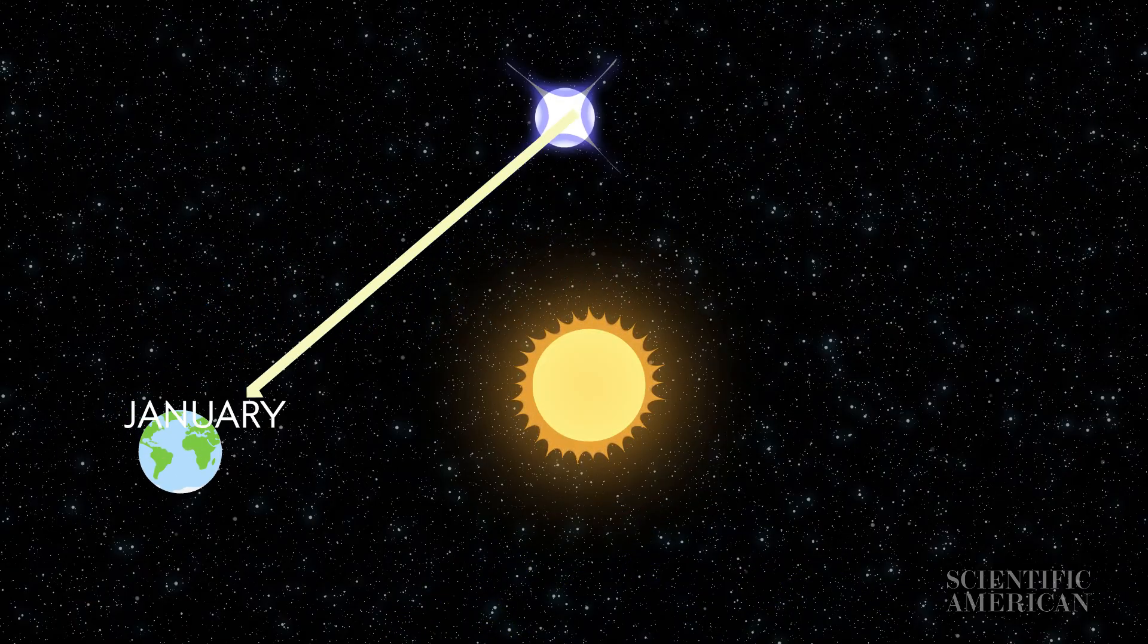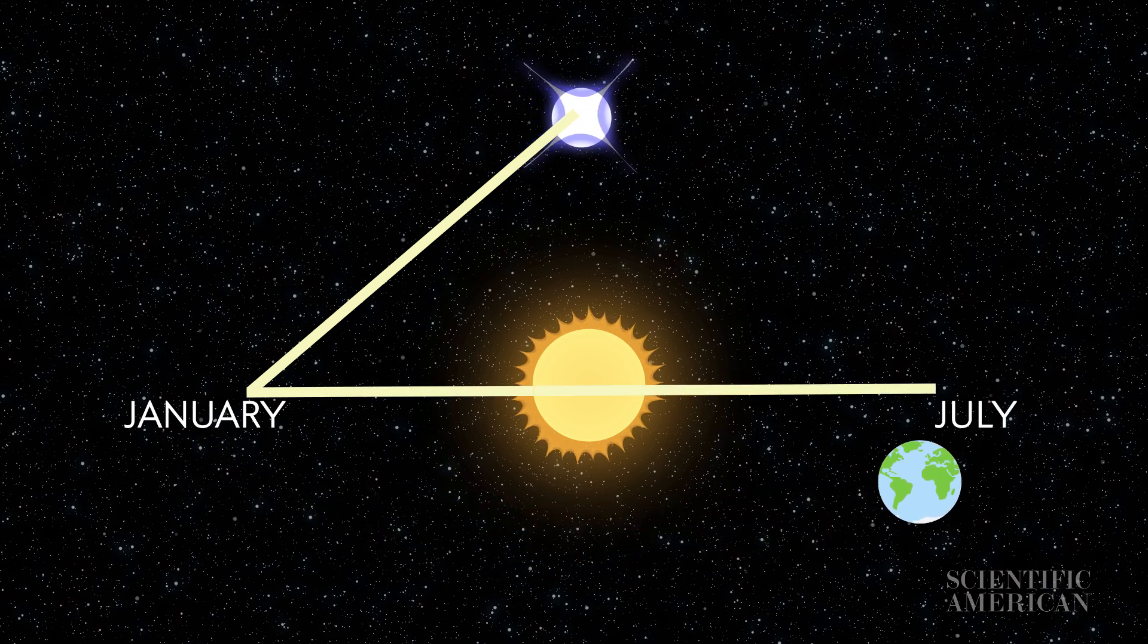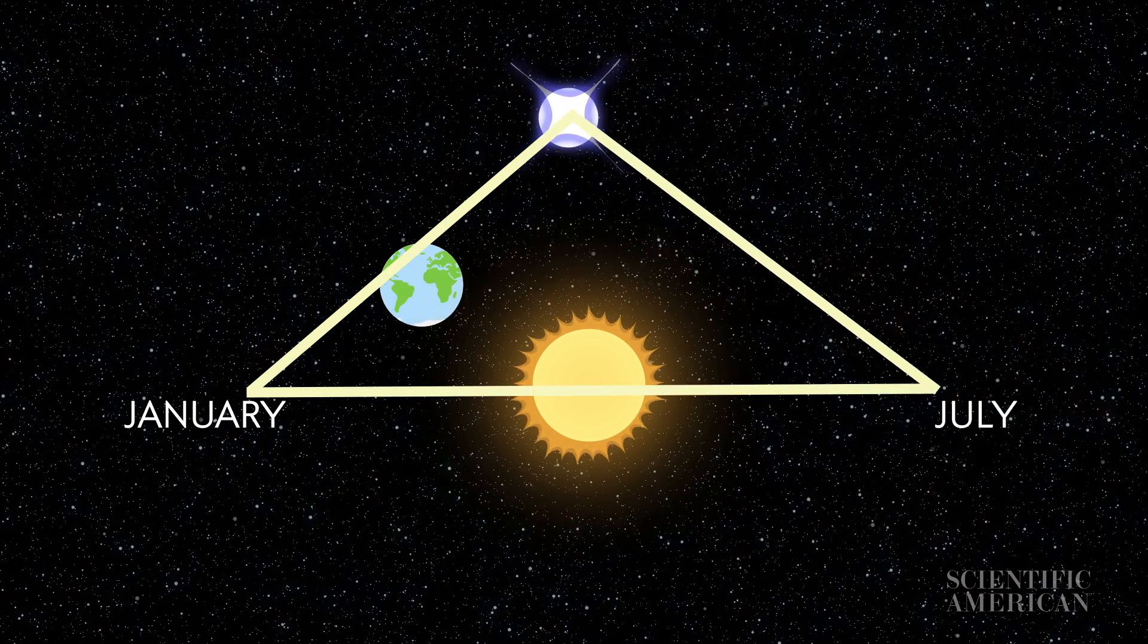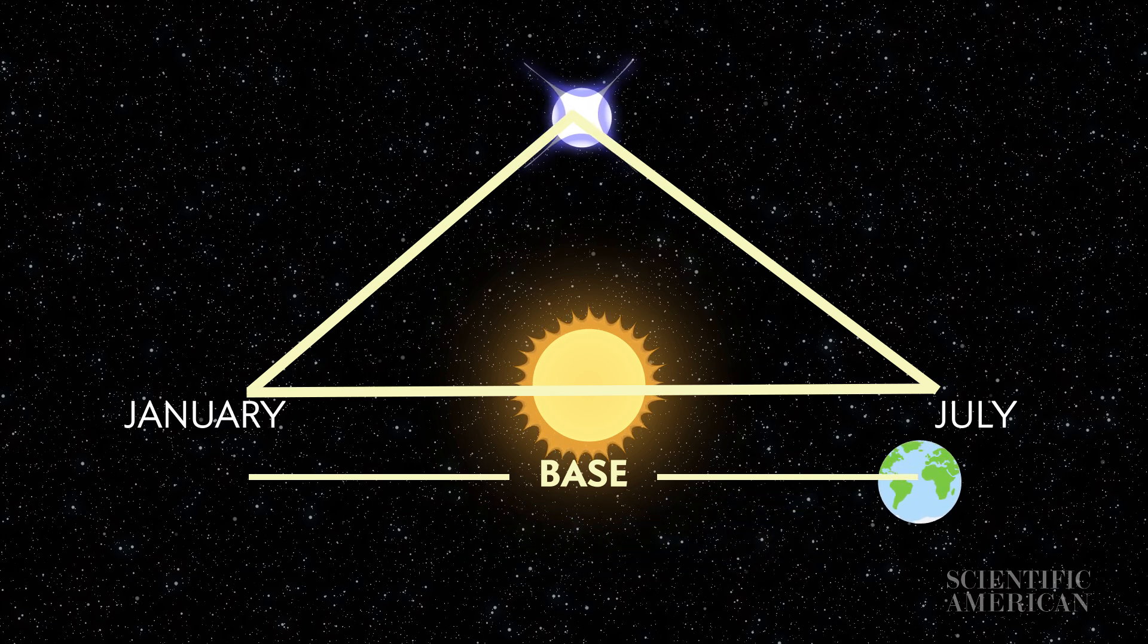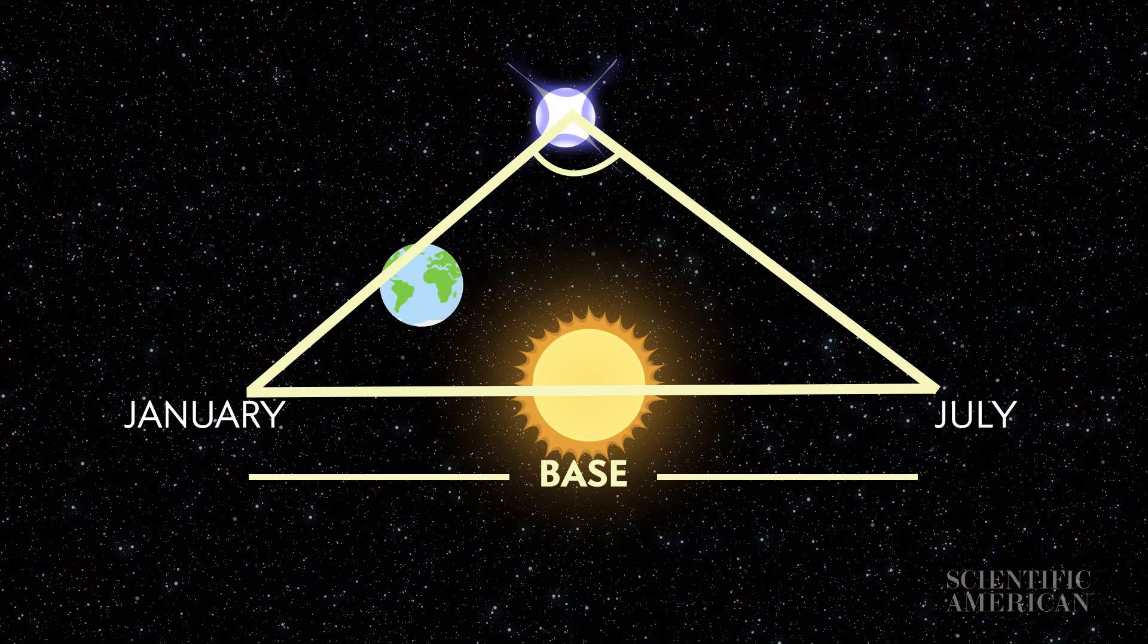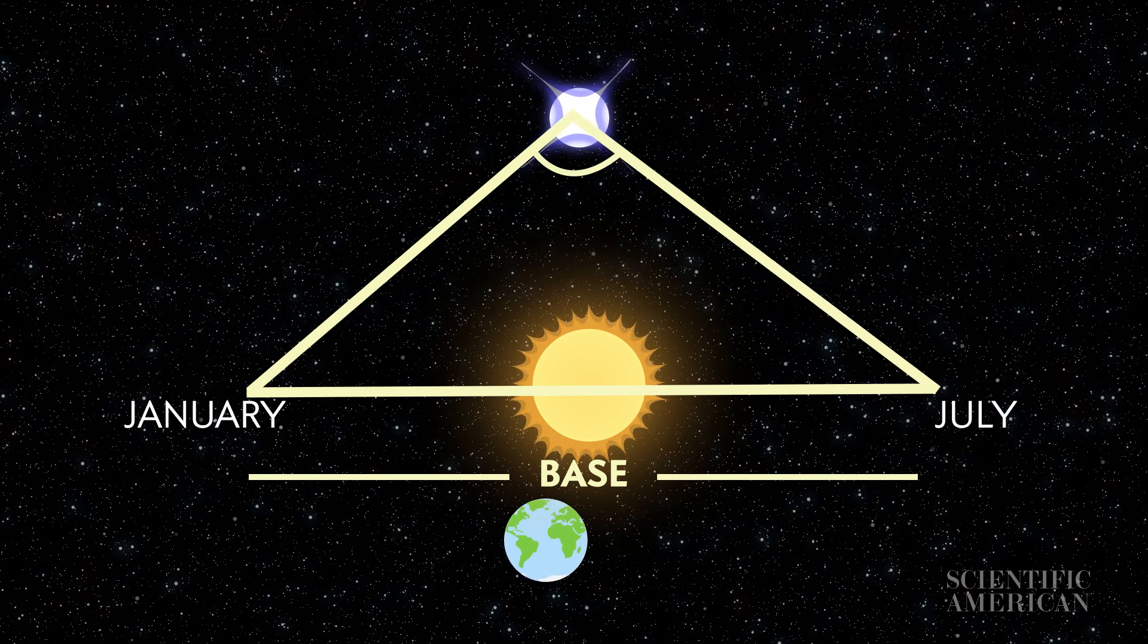By looking at a star in January, and then again in July, we can draw a triangle. The base is the diameter of Earth's orbit. The opposite angle is how far the star appears to shift.